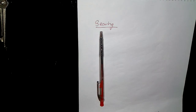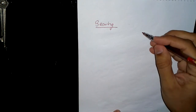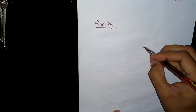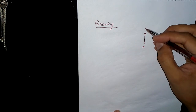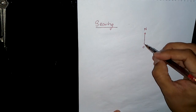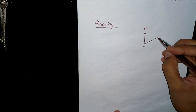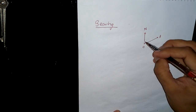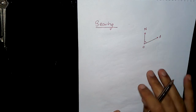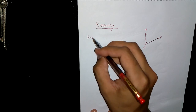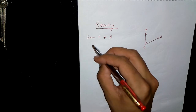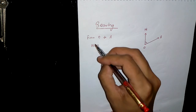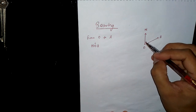Assalamualaikum students, I am Sir Aysen. Today I will teach you the bearing concept. For suppose we have point O here. The North is always at the upper side. For suppose a point A is here, and I am asking you a bearing from O to A — this basically means I am asking you the angle NOA.